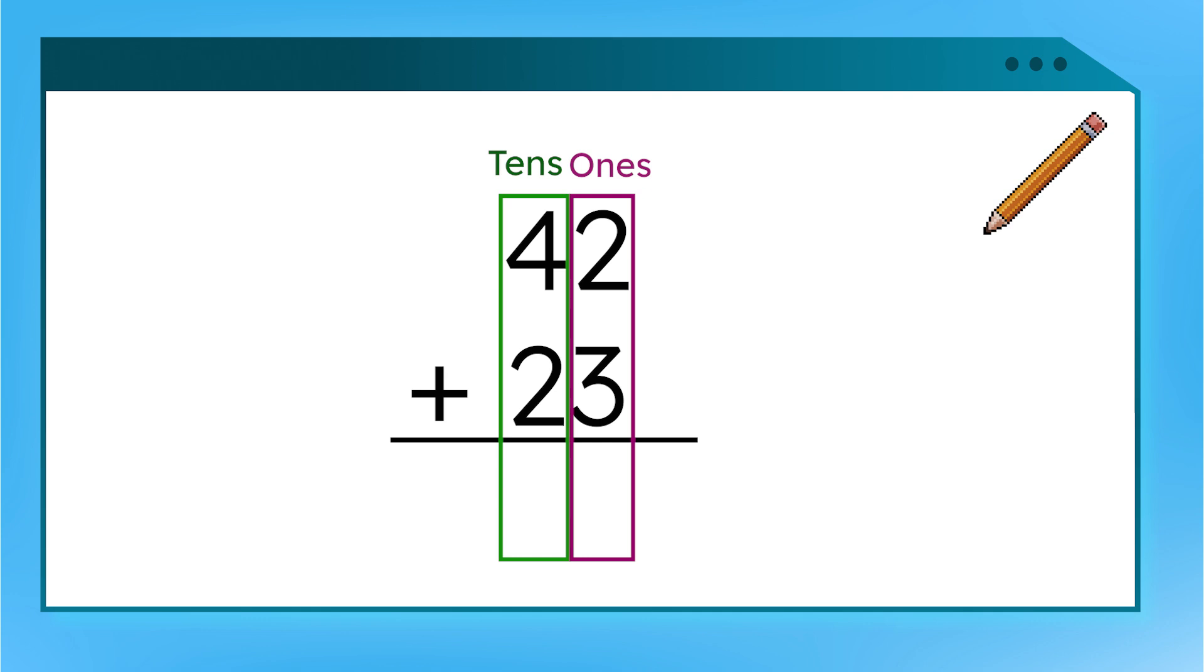But which one do we add first? Yes. When we add vertically, we always start with our ones place. So first, we will add 2 plus 3. We will write our answer, 5, below the ones place.